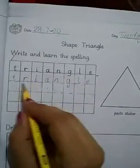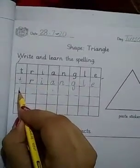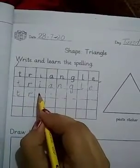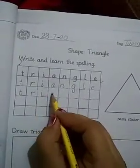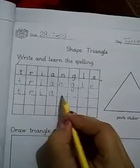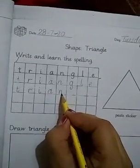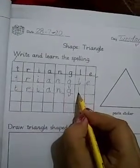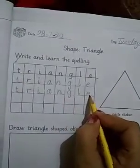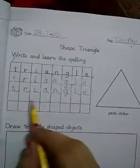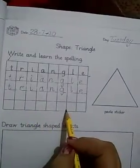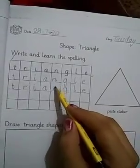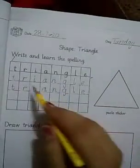We will practice the same, but remember again that we will follow the writing pattern. T-R-I triangle, A-N-G-L-E. Triangle. Write down here triangle, and here triangle.